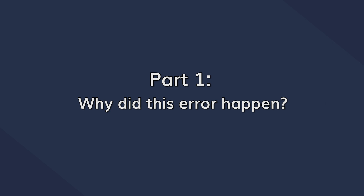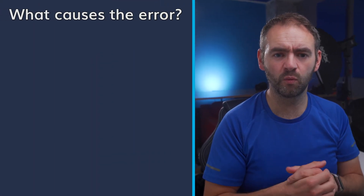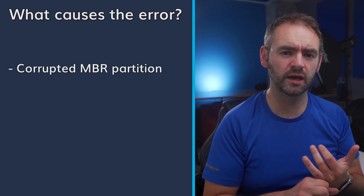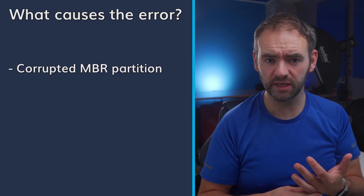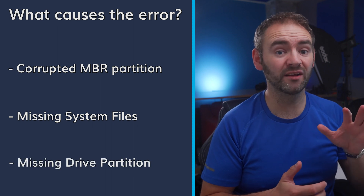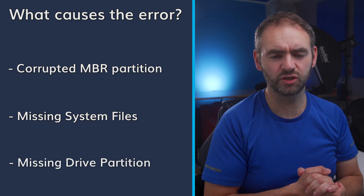Before we get into the methods of resolving the unable to reset PC error, let's first take a quick look at some of the different factors that can cause the issue. In general, the error gets triggered when you're either resetting your PC or trying to install a fresh version of Windows from scratch. Here are some of the factors responsible: either the master boot record partition is damaged or corrupted, a few of the system files might be missing, or a missing drive partition can be the reason why you're unable to reset your PC.